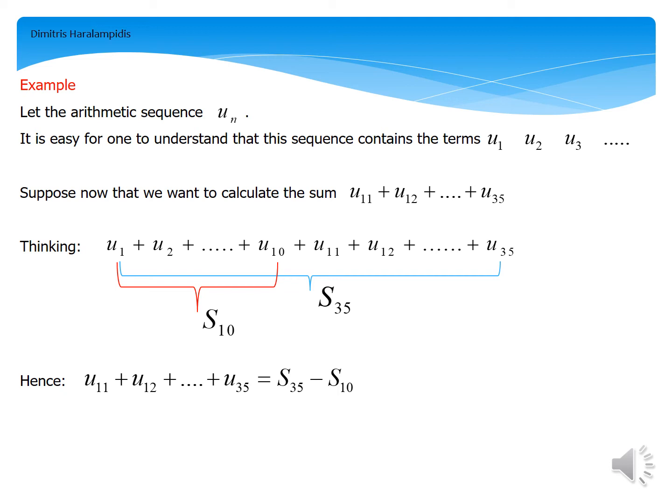Remember that we already know the formula on how to calculate the sum of the first n terms of an arithmetic sequence. So having that in mind, we are thinking that S_35 actually is the sum of the first 35 terms.